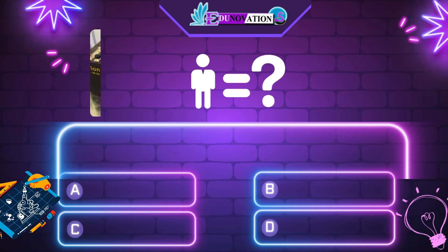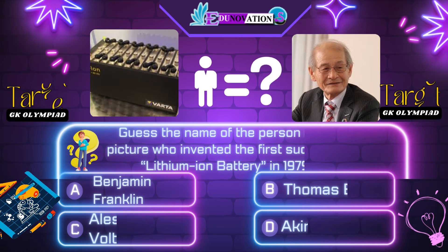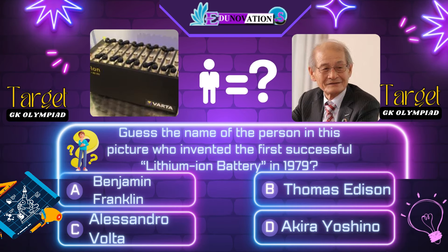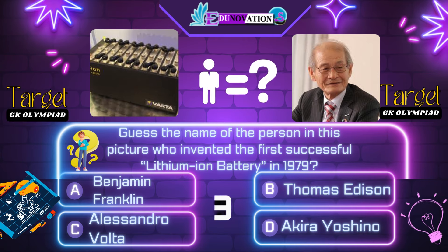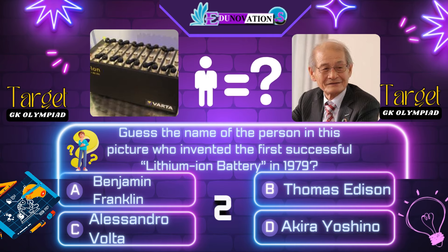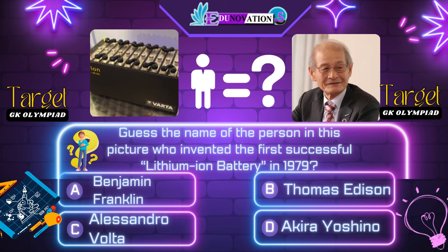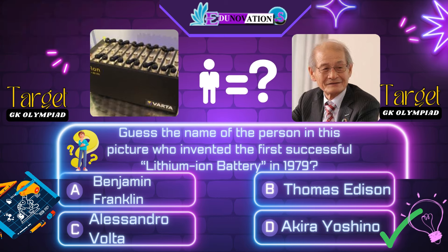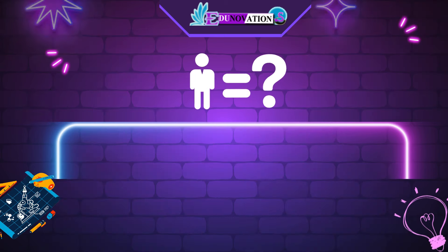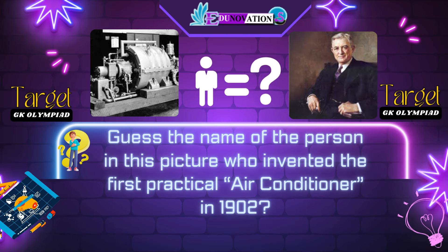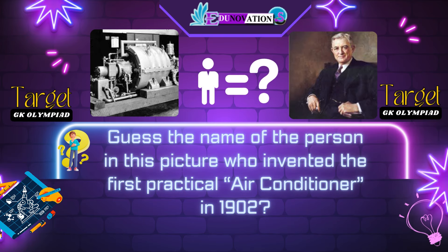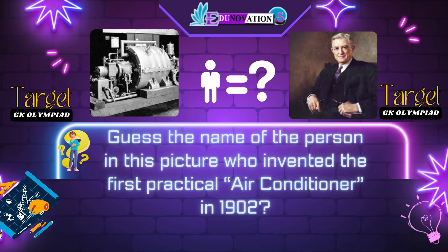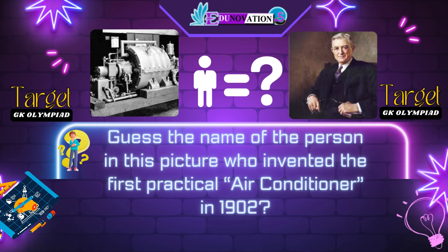Now next question. Guess the name of the person in this picture who invented the first successful lithium-ion battery in 1979. Your options are: A. Benjamin Franklin, B. Thomas Edison, C. Alessandro Volta, D. Akira Yoshino. Time's up. Correct answer is D. Akira Yoshino.